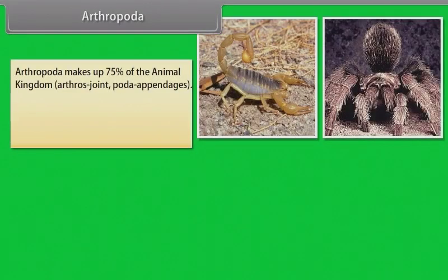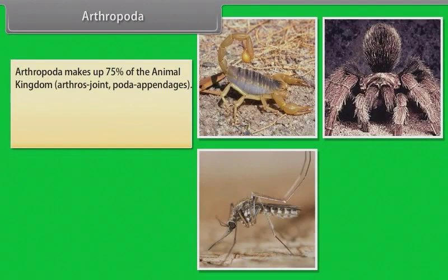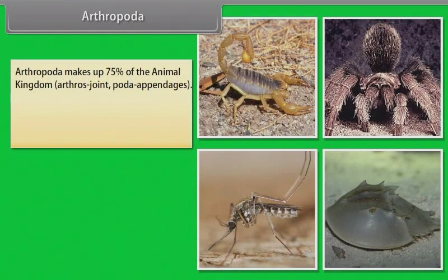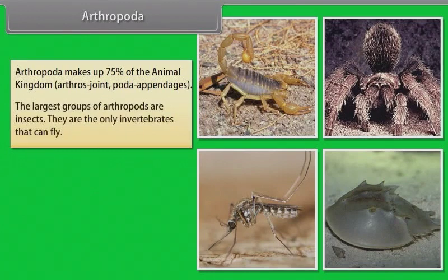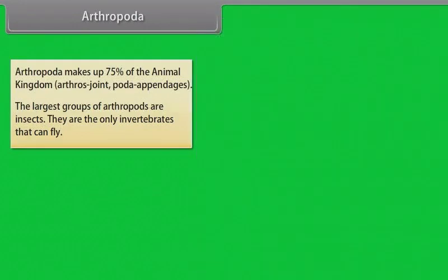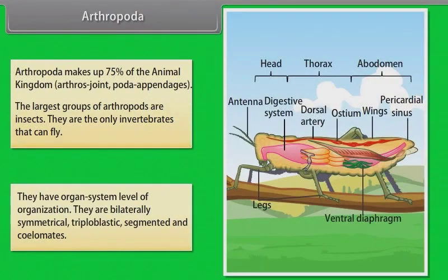Arthropoda makes up 75% of the animal kingdom. 'Arthros' means joint and 'poda' means appendages. The largest group of arthropods are insects — the only invertebrates that can fly. They have organ system level of organization.